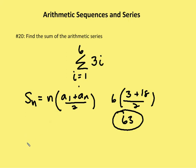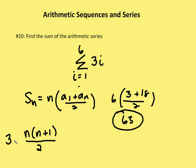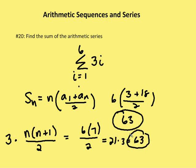A second way to handle this is to use the summation formula. I know that the sum of i from one to n is n times n plus one over two. Since I have three i instead of just i, I multiply by three: three times n times n plus one over two. With n equal to six, six times seven is 42, divided by two is 21, and 21 times three equals 63. You can see that we get the same answer using both of these processes.